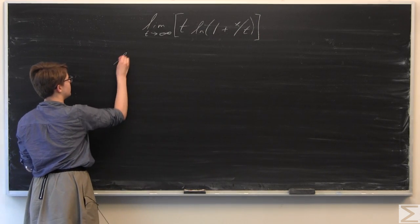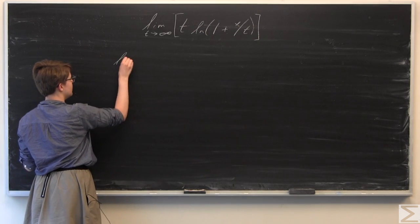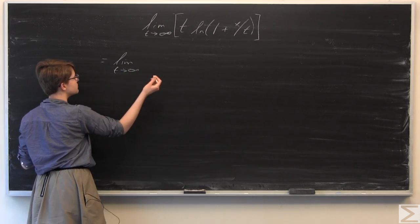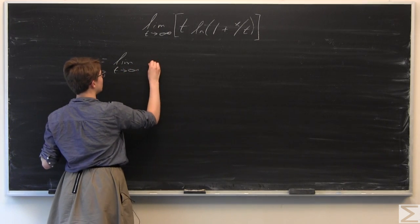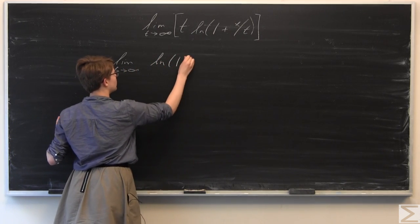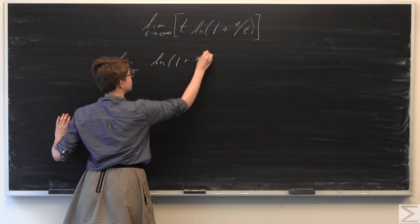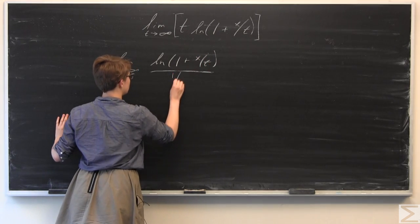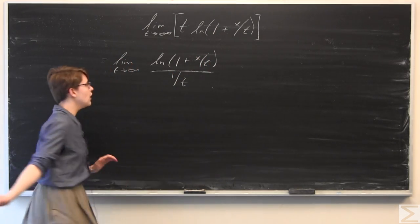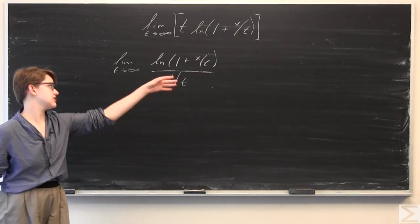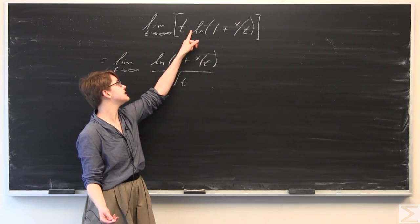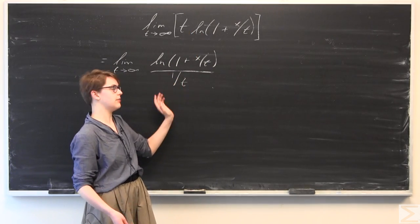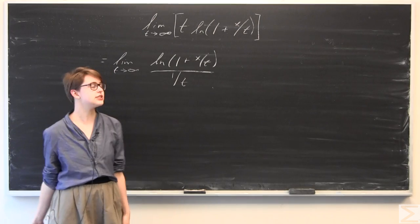We'll rewrite the limit as: limit as t goes to infinity of ln(1 + x/t), all over 1/t. This is exactly the same thing — instead of writing t times ln, I divided by 1/t. So it's the same expression.